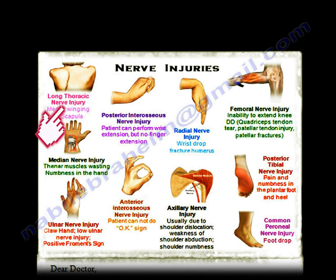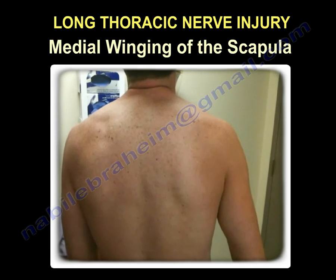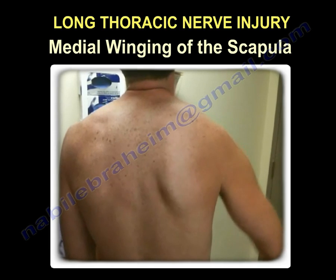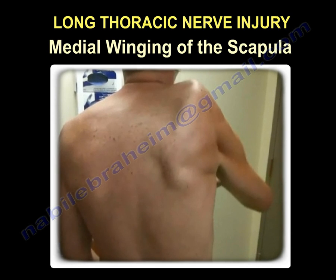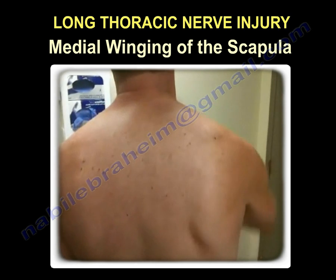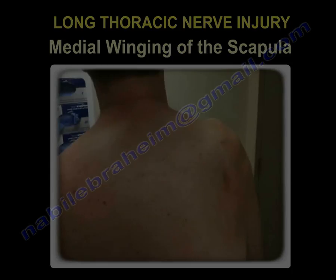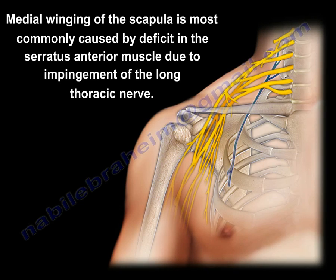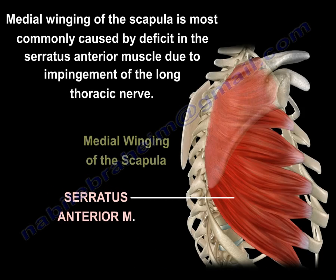Long Thoracic Nerve Injury. Here you can see a patient example of medial winging of the scapula, which is caused by long thoracic nerve injury. Medial winging of the scapula is most commonly caused by a deficit in the serratus anterior muscle due to impingement of the long thoracic nerve.